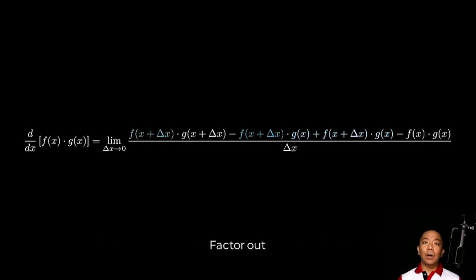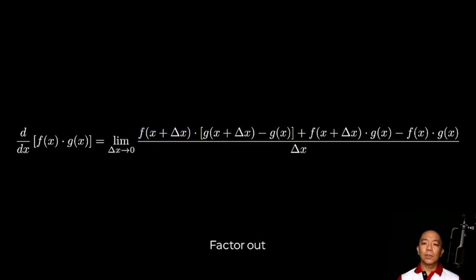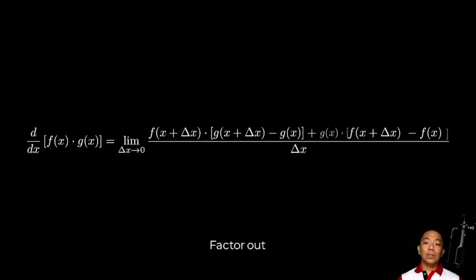But we won't add them at mag-zero. We'll take advantage na we could factor out f of x plus delta x dun sa first two terms. And dun sa second two terms, ang common factor naman nila ay g of x. We'll factor that out as well.